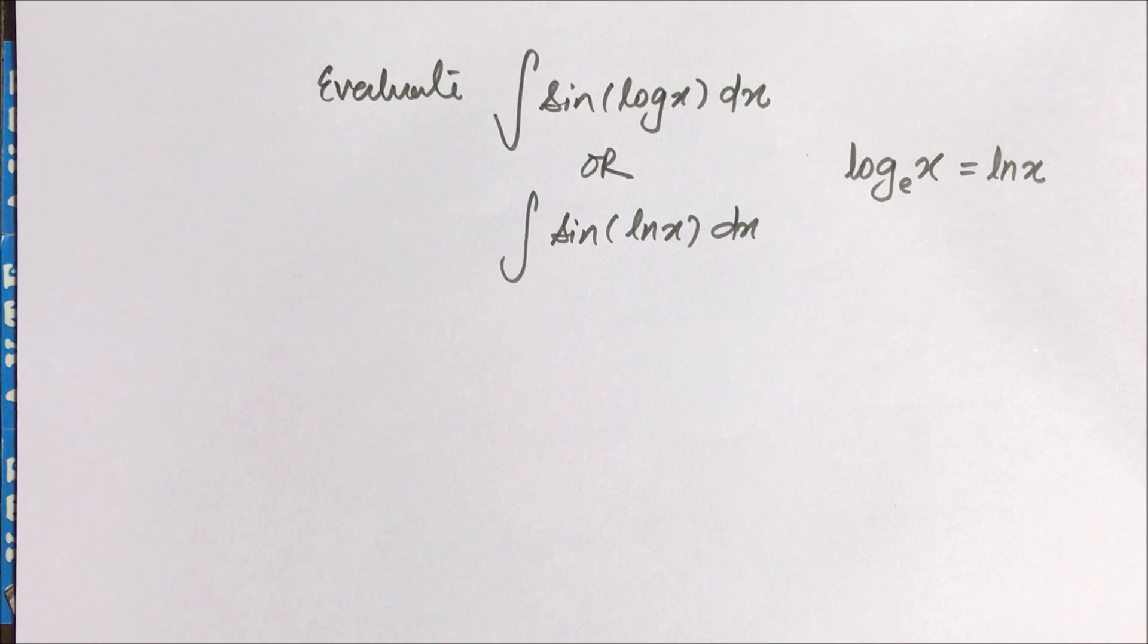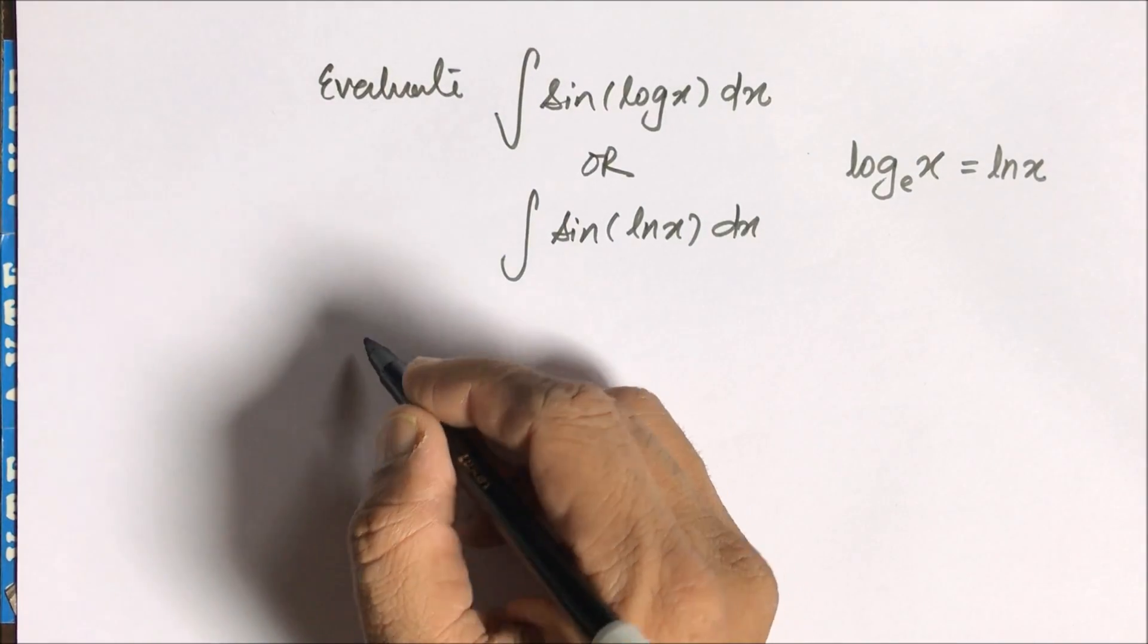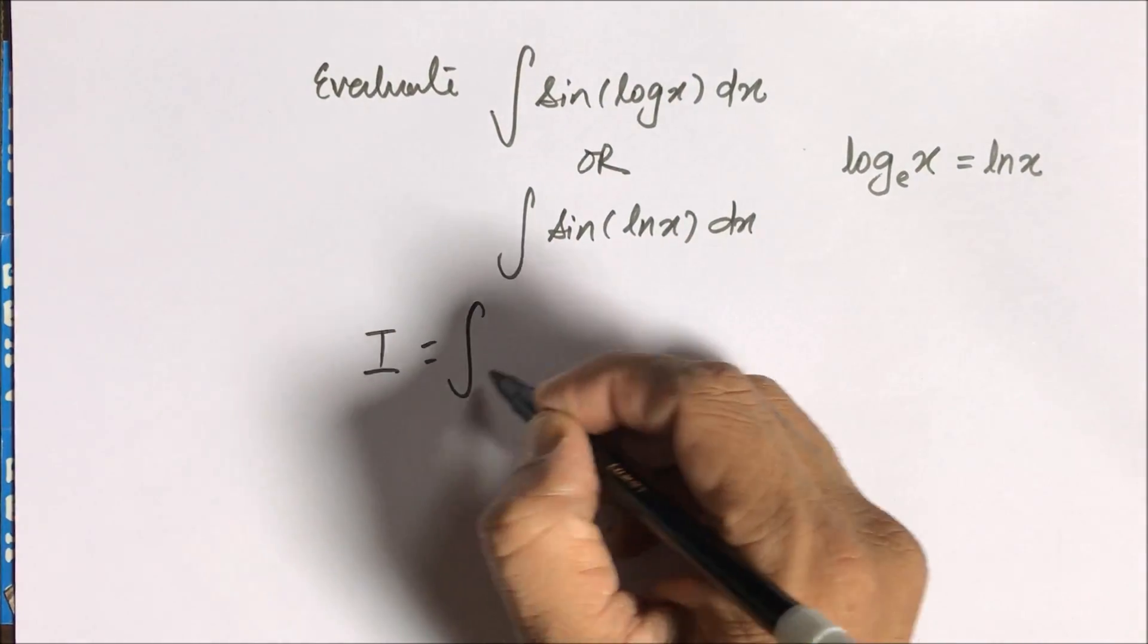The best thing will be to apply by parts. There is another way also, and in that you can put log x equals t - that is, you can substitute log x - but the best is to apply by parts by taking sin(log x) as first and one as the second function.